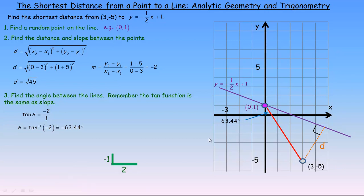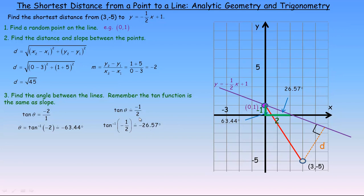Now we find the angle the original line y = -1/2 x + 1 makes with the x-axis. Its slope is -1/2, meaning a rise of -1 and a run of 2, so tan(θ) = -1/2. Taking the inverse tangent gives -26.57°, and again we just use the magnitude: 26.57°. We then use these two angles to find the interior angle of our triangle.